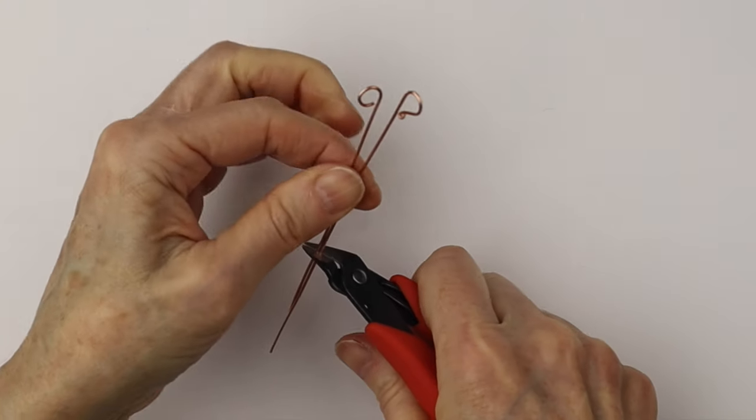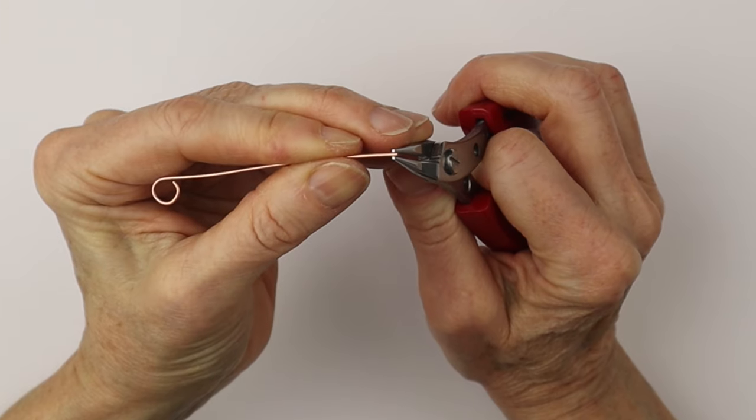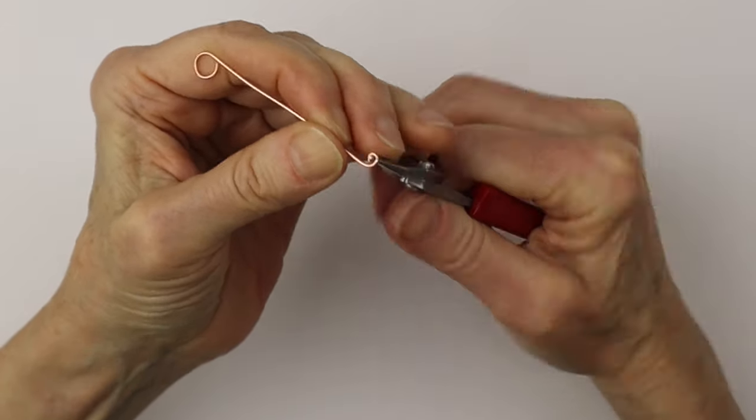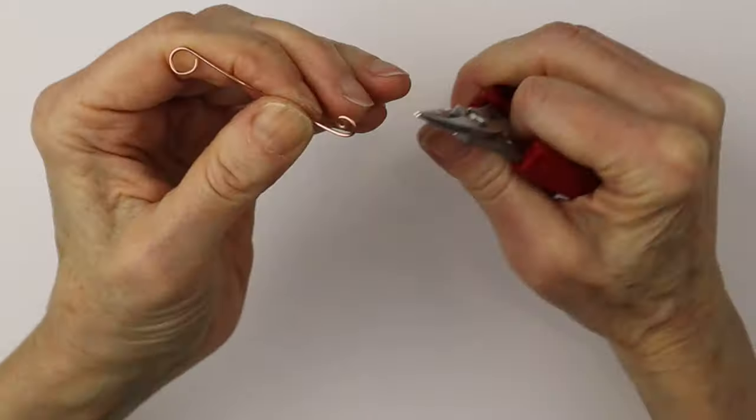Now you're ready to make your spirals. Take the end of the wire with a very small round nose pliers. I'll link up all my tools in the description below the video. We're just going to work our way in.